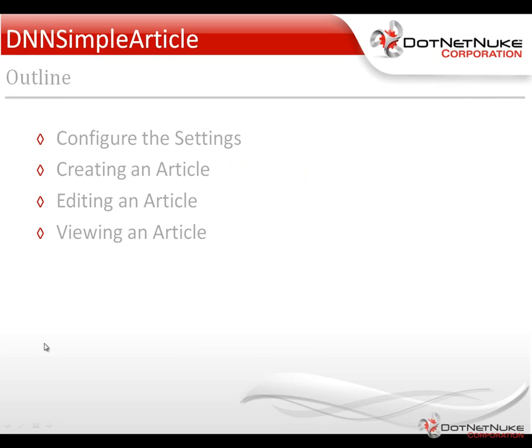We're going to configure the settings for our Simple Article Module, which is already on a page within our .NET Nuke website. Then we're going to go through the process of creating an article and associating categories to that article, editing the article, and then we'll take a look at how we can view the article. In an additional video, we're going to show you how you can implement Facebook comments within the DNN Simple Article Module using the Razor module that comes with .NET Nuke 5.6.1.